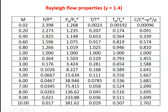This is a sample table for γ = 1.4, with properties available for Mach numbers from 0.02 to 10: P/P*, P₀/P₀*, T/T*, T₀/T₀*, and C/C* (equal to ρ*/ρ). We take these values from the table and calculate any unknown value, including the amount of heat transfer.